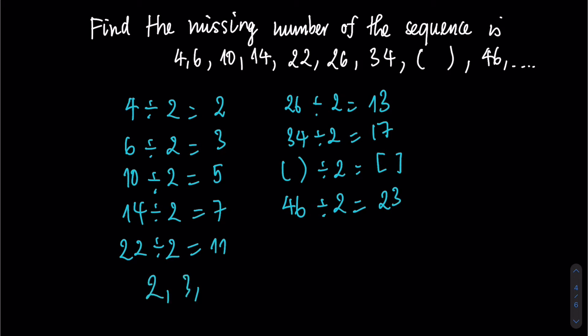2, 3, 5, 7, 11, 13, 17, the missing value, and 23.